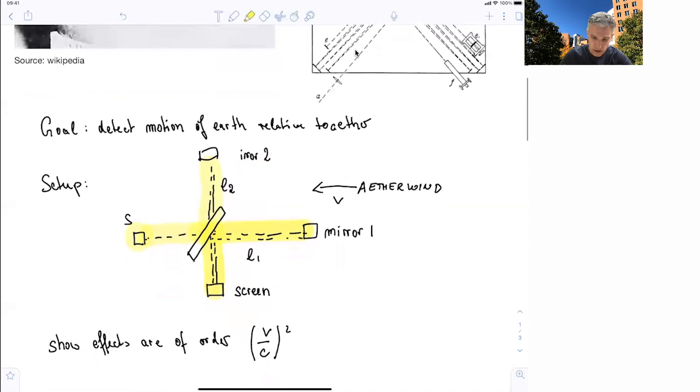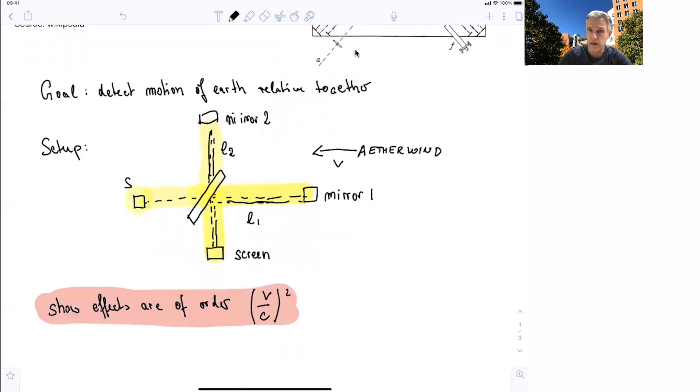I want you to show that the effect they're about to observe, or they will not observe, is of the order of v over c squared. And what you want to do is compare the light as it travels on this path number one to one mirror and on the second path to the second mirror. So if you're following the video, I ask you to just stop here and figure out how long does it take for the light to travel on this path here, on the lower path, path number one, or path number two.